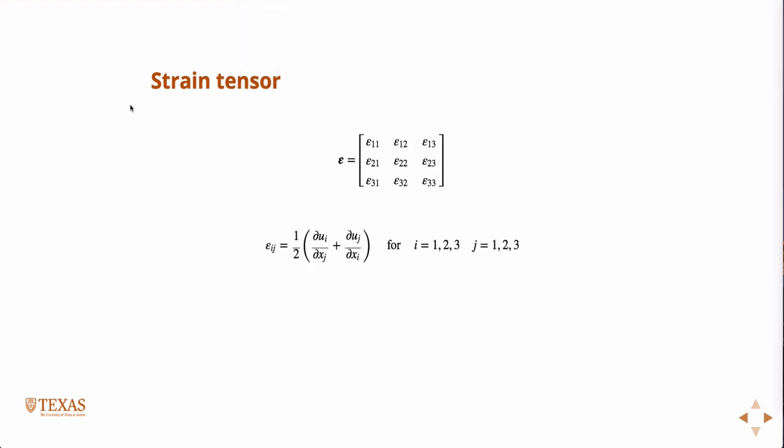Okay, so we define our strain tensor. And just to remind you also, what we're trying to do here is we're trying to close the problem of conservation of momentum. Remember we have a conservation of momentum equation which relates displacements and has this divergence of stress term in it. And we're trying to get a relationship between stress and displacement. And the intermediate quantity we use is strain. So strain is a function of displacement. Then if we have a relationship between stress and strain, we can close that problem. We can get everything back in terms of displacements that we can solve.